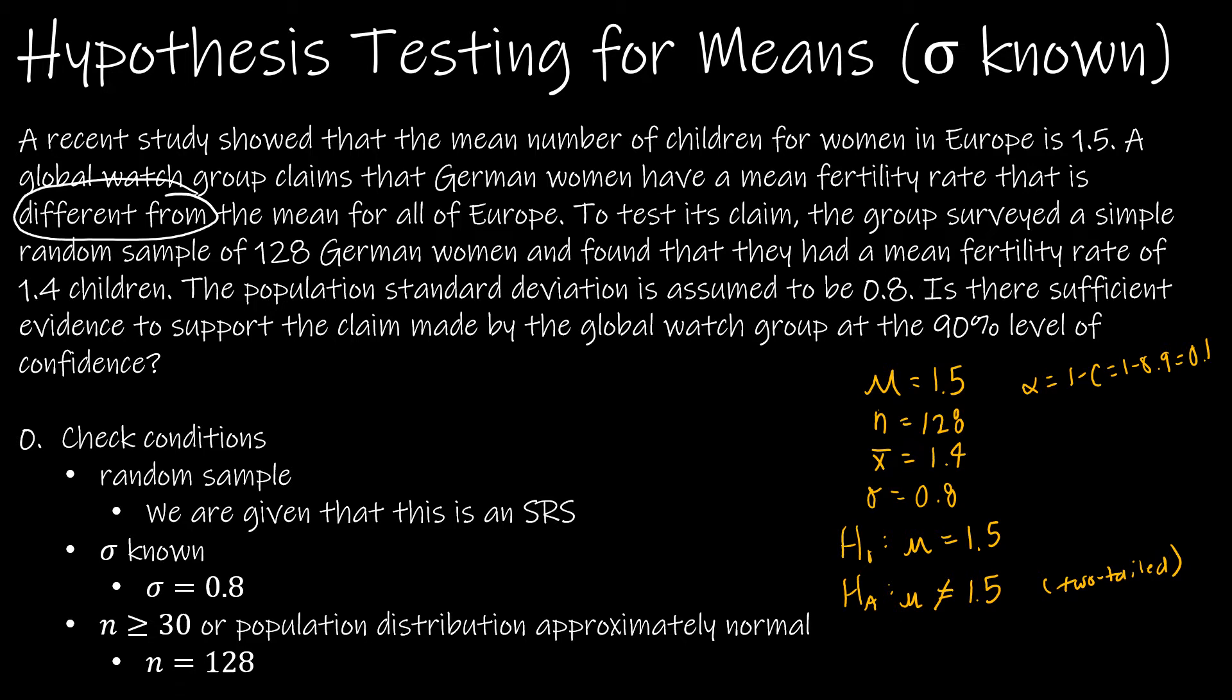Now let's check conditions. Random sample? Yes, it says a random sample. Sigma is known? Yep, it's 0.8. And is N greater than or equal to 30? Yes, it's 128.